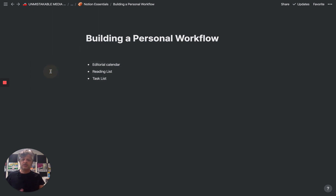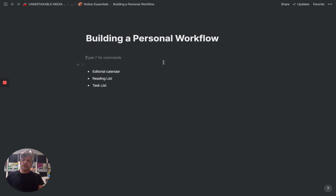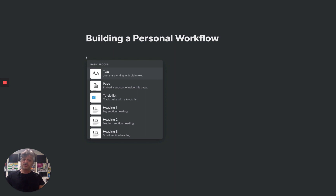What we're going to do, just for the sake of an example, is we're going to build a personal workflow for somebody who has a podcast. For this podcast, we're going to have three core elements: an editorial calendar, which is going to have all our content for that podcast; a reading list, for anybody who interviews authors or has reference material; and a list of tasks related to that podcast. But before we get started, let me show you one of the basic building blocks that is really central to Notion.